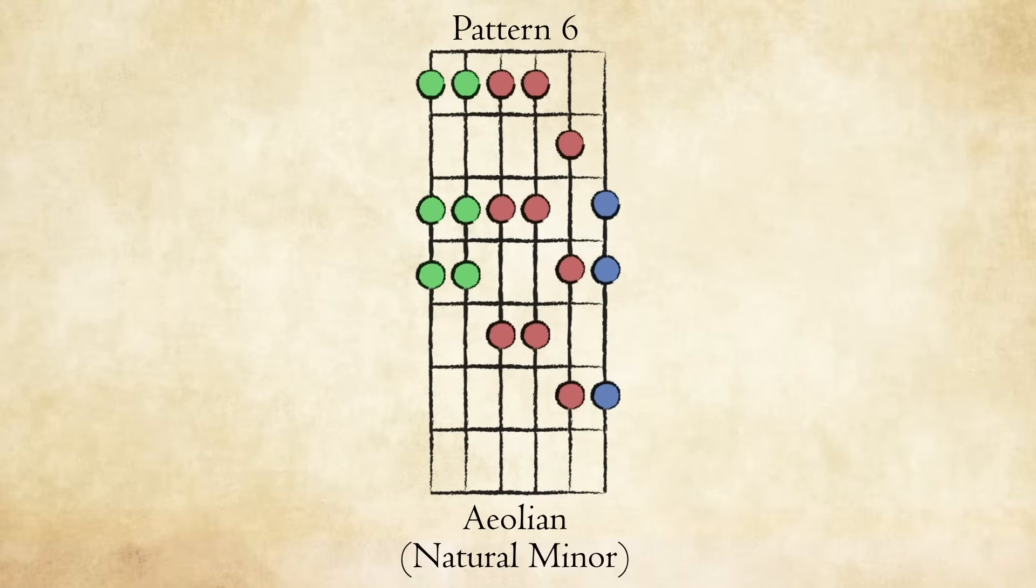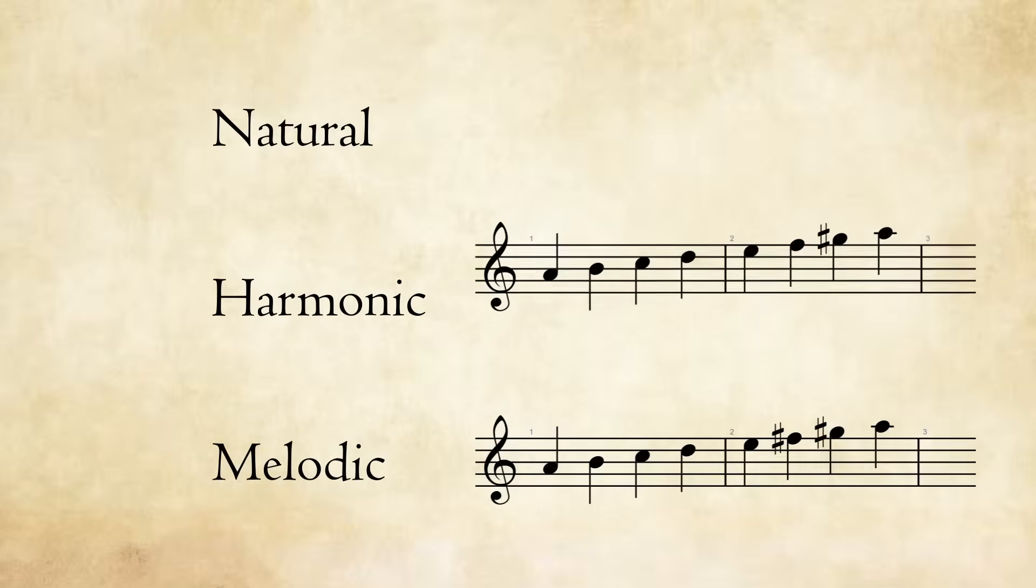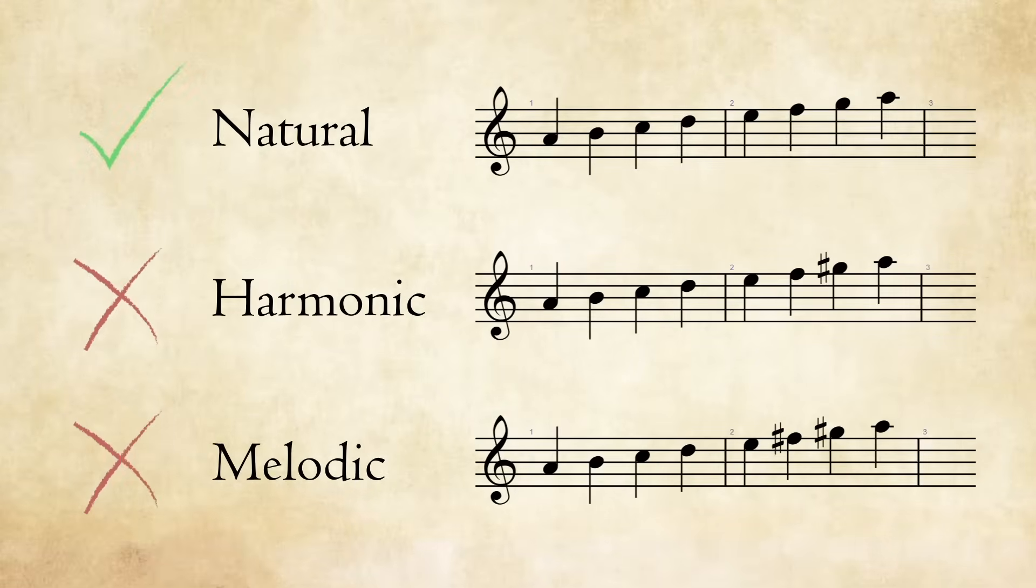The natural minor scale is simply the Aeolian mode. Just use pattern VI of the major scale. That's it. There's nothing else to it. I don't cover the harmonic and melodic minor scales in this method since they are non-diatonic, meaning they have notes that are altered in some way. However, once you've got a solid grasp of the Aeolian mode, changing it to harmonic or melodic becomes much easier.